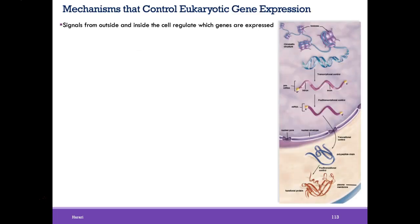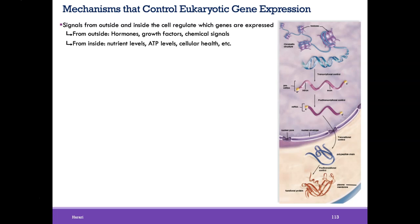There are several mechanisms that control eukaryotic gene expression. We'll break it down as simply as possible. There are signals from outside and inside of the cell that regulate which genes are expressed and when. From the outside, hormones, growth factors, and chemical signals interact with the cell through membrane receptor proteins, telling it what to express. Inside the cell, gene expression depends on nutrient levels, ATP levels, and how healthy the cell is.